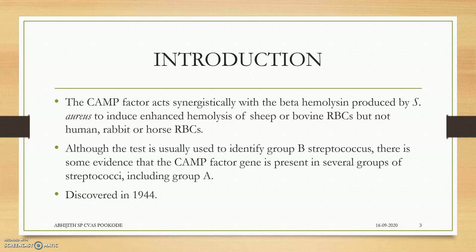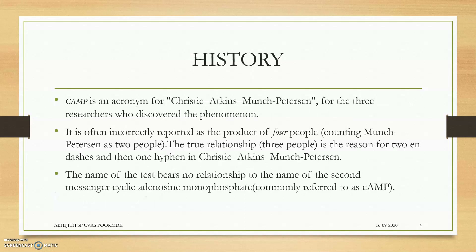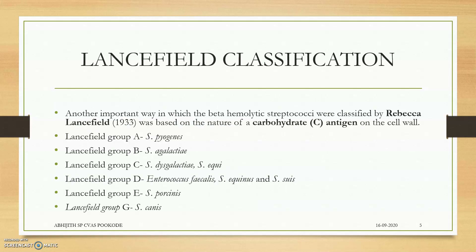The CAMP factor enhances hemolysis of sheep or bovine RBCs, but not human, rabbit, or horse RBCs — this was asked in a previous ICAR exam. The CAMP test was discovered in 1944. Importantly, CAMP here is an acronym for Christie, Atkins, and Munch-Petersen, where Munch-Petersen is one person, not two — so it is not the same as cyclic AMP.